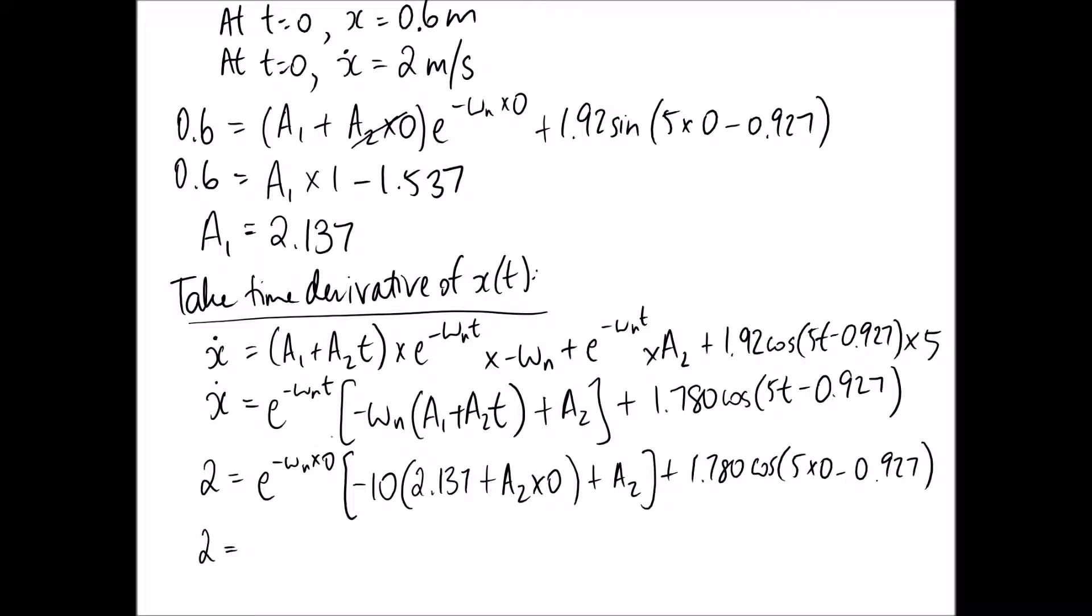So simplifying this, we get 2 equals e to the power of 0 which is 1. And this is going to become just 10 times 2.137 because A2 times 0 goes away. And we have of course A2 there as well. So this just becomes that. And we can simplify this last term to just be a number and it becomes 1.067.